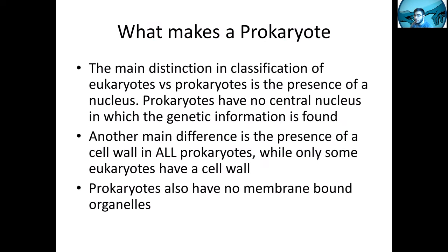Now let's talk about what makes a prokaryote. The main distinction between eukaryotes and prokaryotes is the presence or absence of a nucleus. The nucleus is that structure in the center which holds the DNA in animal and plant cells. Prokaryotes do not have a central nucleus — the genetic information is just stored inside the cell, floating around. Another main difference is the presence of a cell wall. All prokaryotes have a cell wall, but only some eukaryotes do — plants have cell walls, but animals like humans don't.